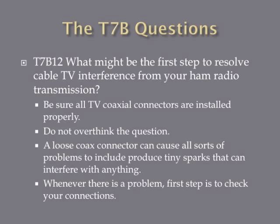What might be the first step to resolve cable TV interference from your ham radio transmission? The answer is to be sure all TV coaxial connectors are installed properly. The first step in determining the problem is making sure that your equipment and the equipment being interfered with is operating correctly. A loose connector can cause all sorts of problems — it causes sparks and can actually generate additional RF. So whenever possible, the first step is to check the connections.